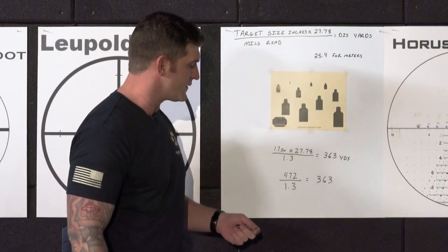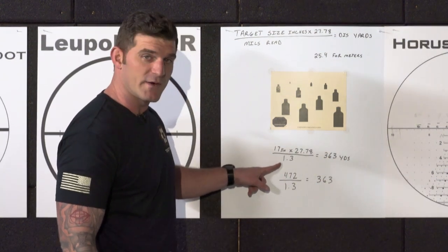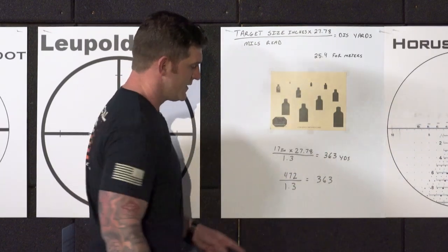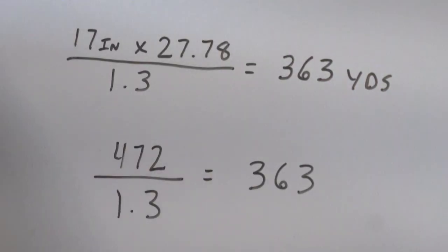17 inch wide target. We times it by 27.78. And we divide it by our 1.3, which is our mils read. This is our mils read. And then we get 363 yards. So that would be our sight picture for 363 yards.